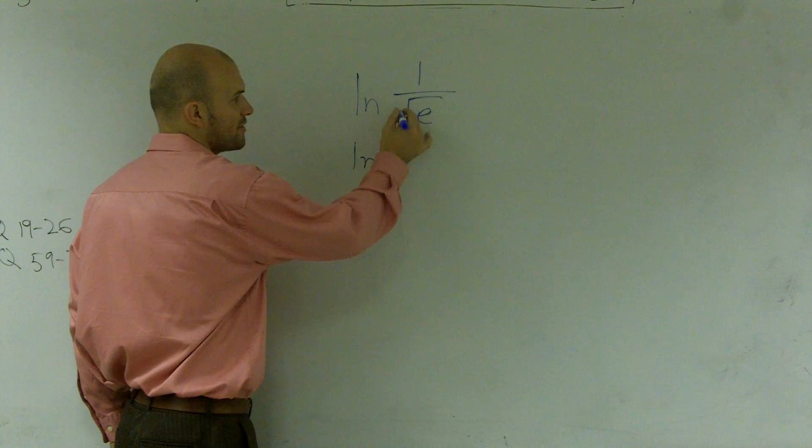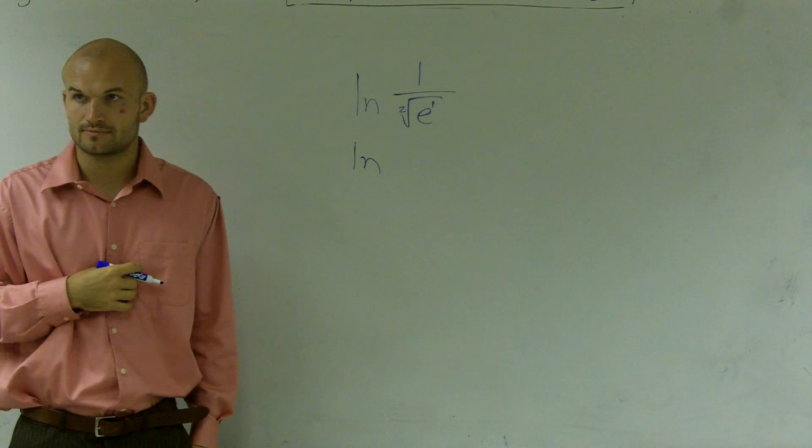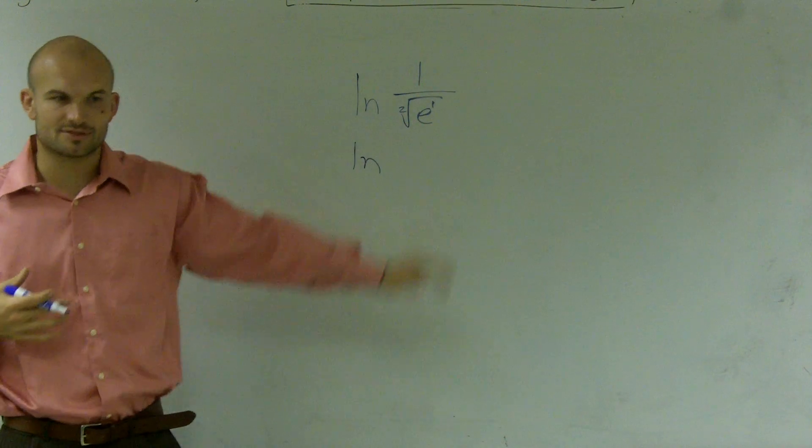So I'm going to write this as, instead of, remember, this is a square root. That can be a two there, and that's a one up there, right? Because remember, the square root, we just usually don't write the two there.